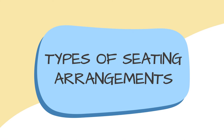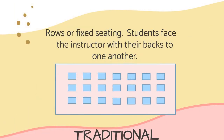Now we will take a look at the different types of seating arrangements. First, we have the traditional setup: rows or fixed seating. Students face the instructor with their backs to one another. The highest communication interactions between instructors and students typically occurs with students in the first row or along the middle of the classroom. Students in back rows are more likely to be less engaged. This setup is good for teacher-centered approaches.